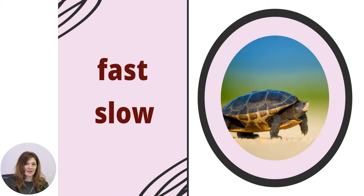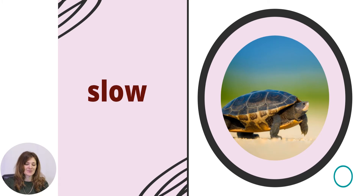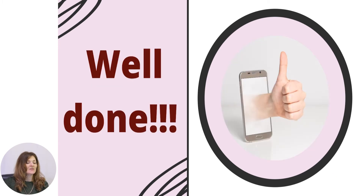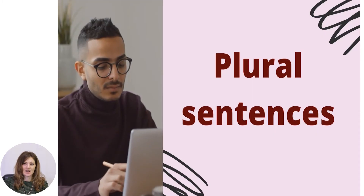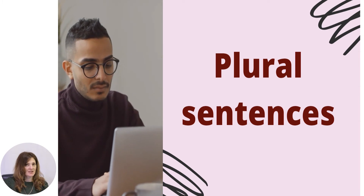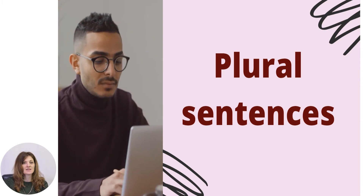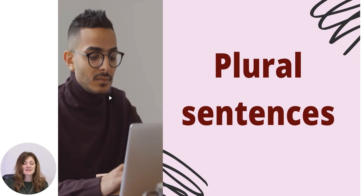Look at the picture. How are the turtles — fast or slow? Slow is the correct word. Well done, I knew that you could do this easily. Bravo. And now, as I have mentioned, let us revise some plural rules and learn how to make plural sentences.